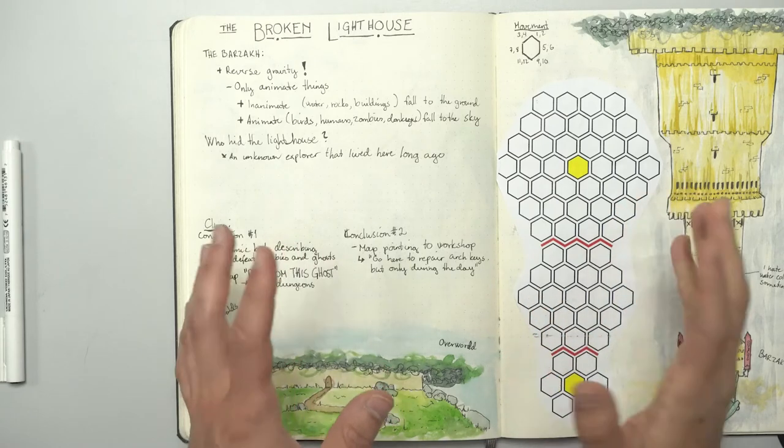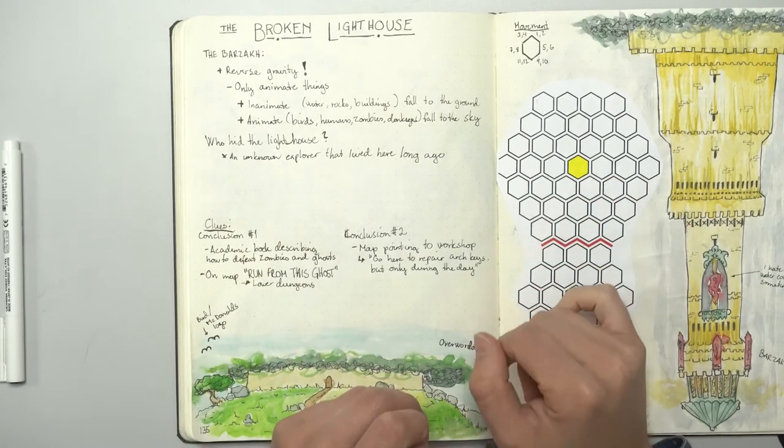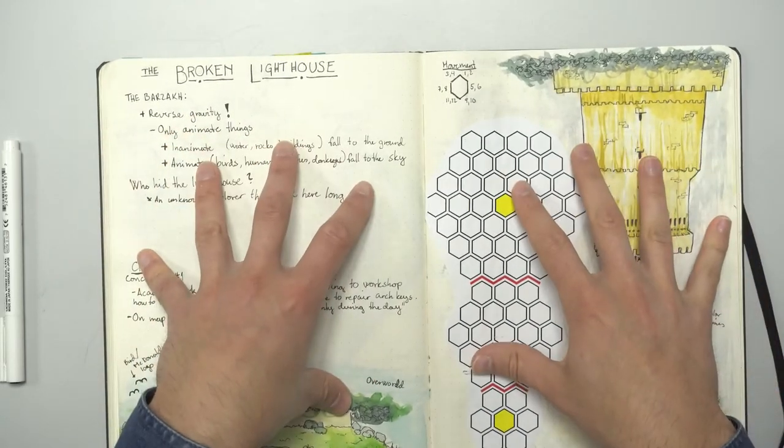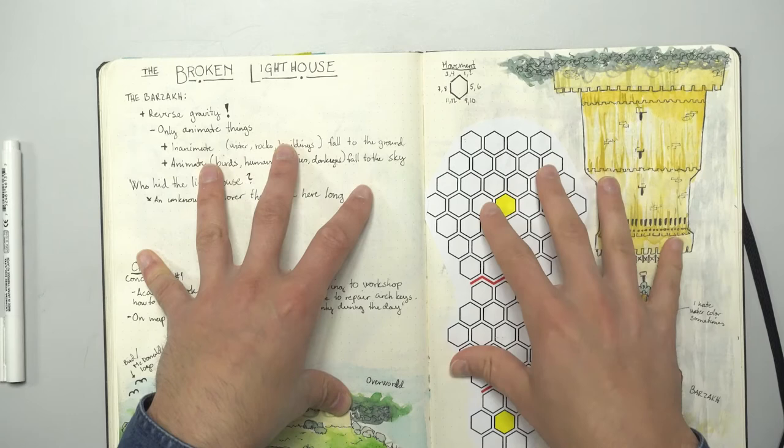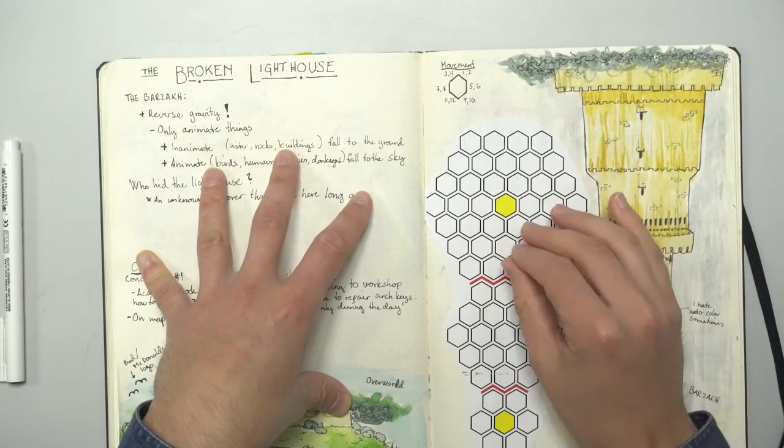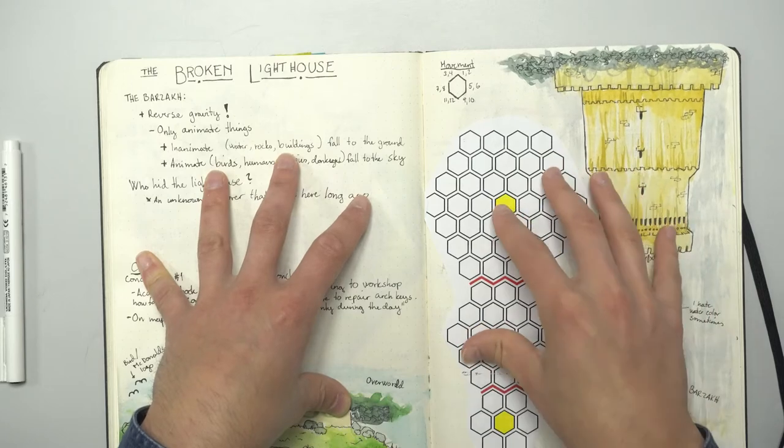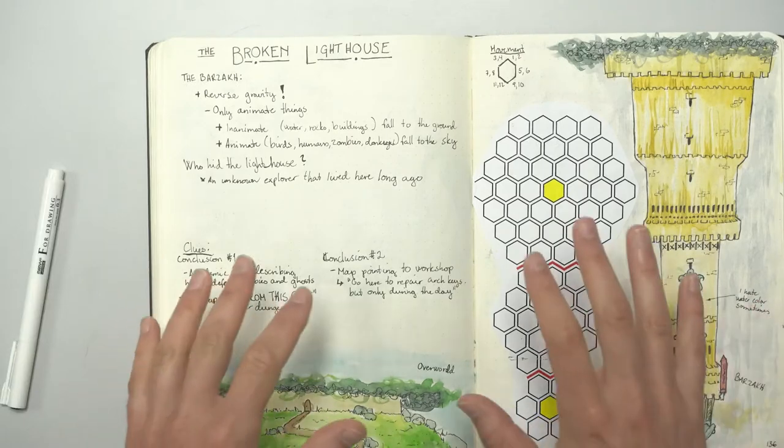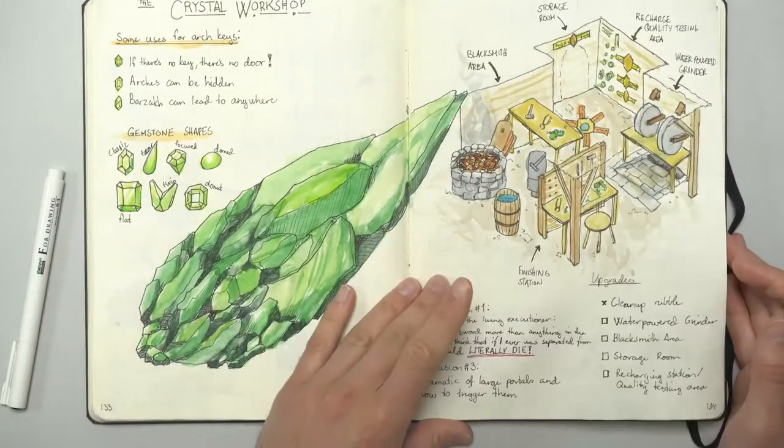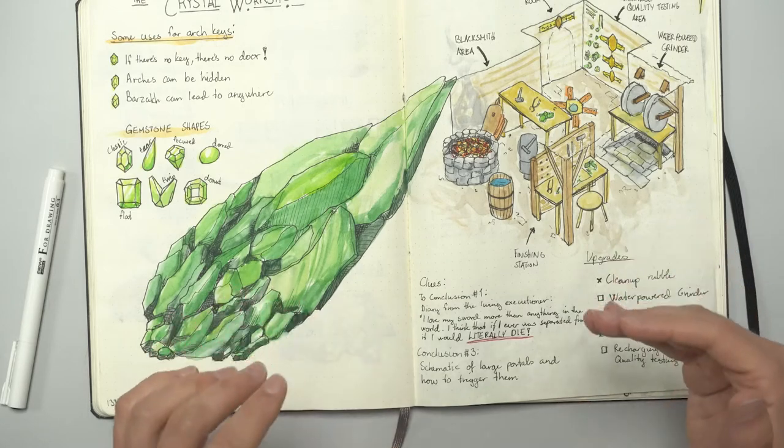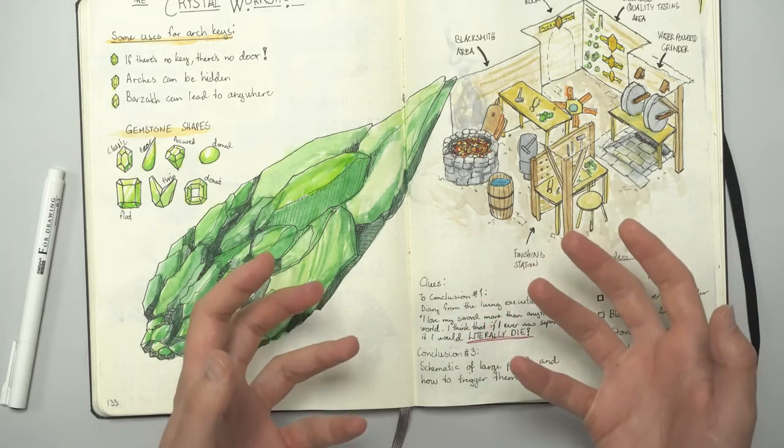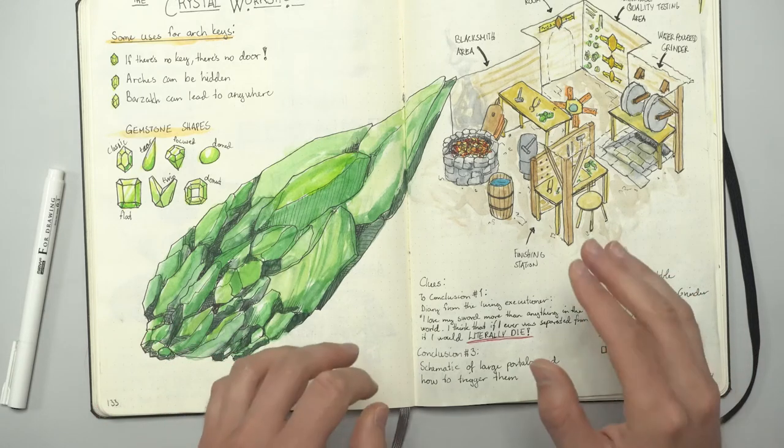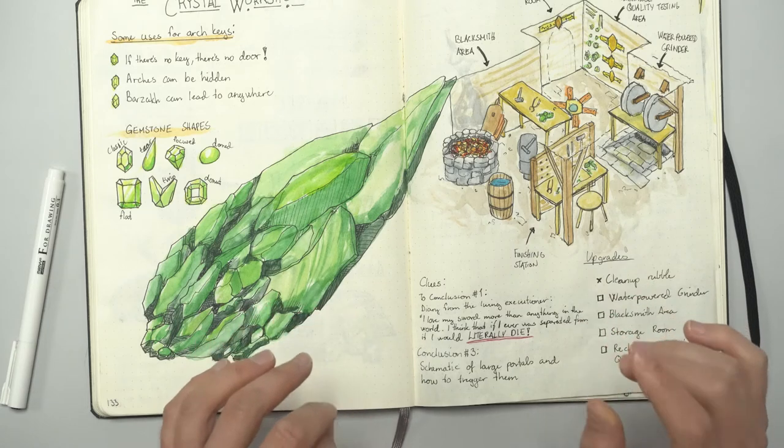Well, that was quick. Was that too quick? Okay, well, moving on. Lastly, the broken lighthouse. Two more clues. Where the first one is a schematic. A schematic on how to make an enormous portal and the device that triggers it. This schematic is going to be placed in the crystal workshop.